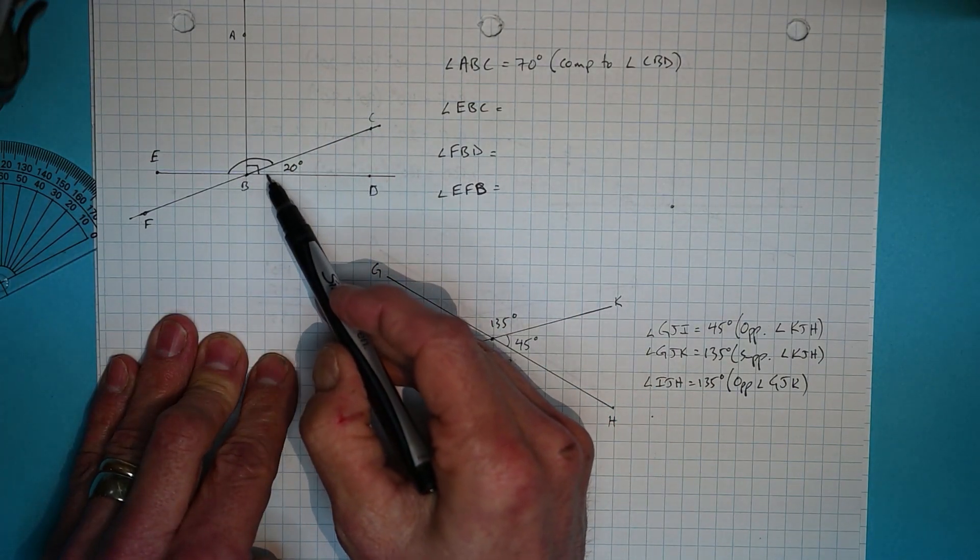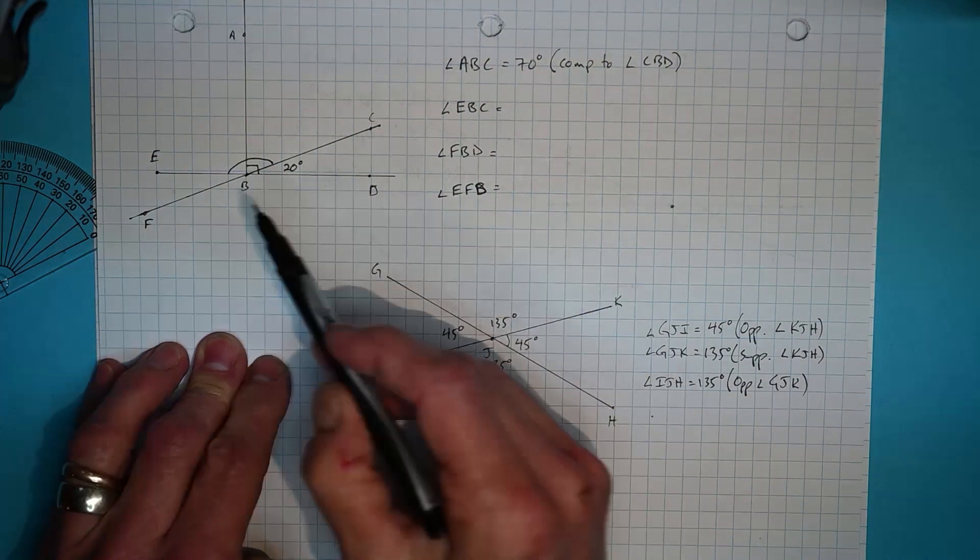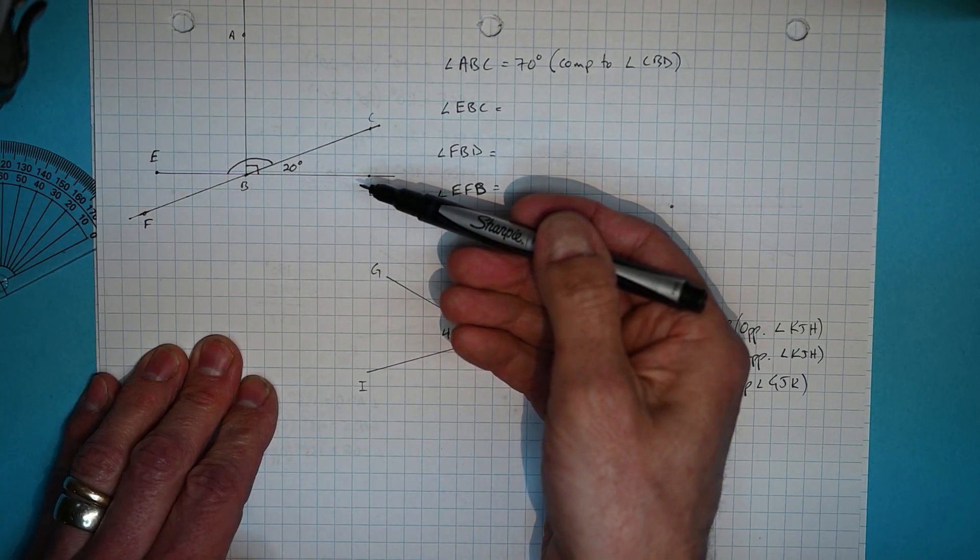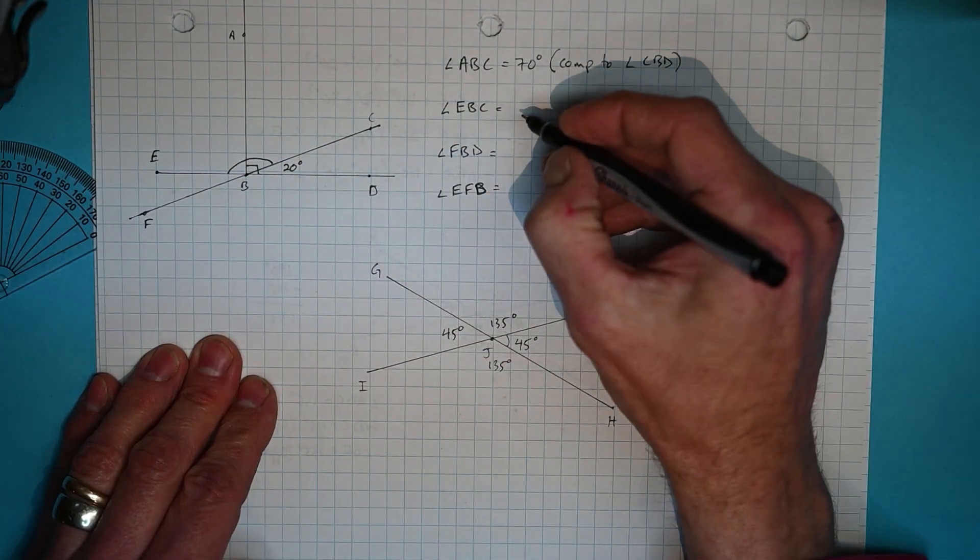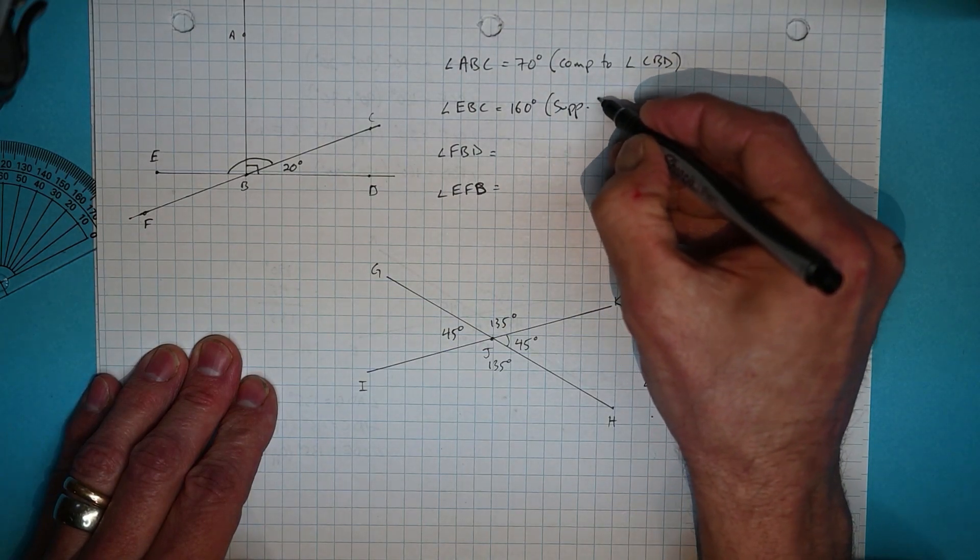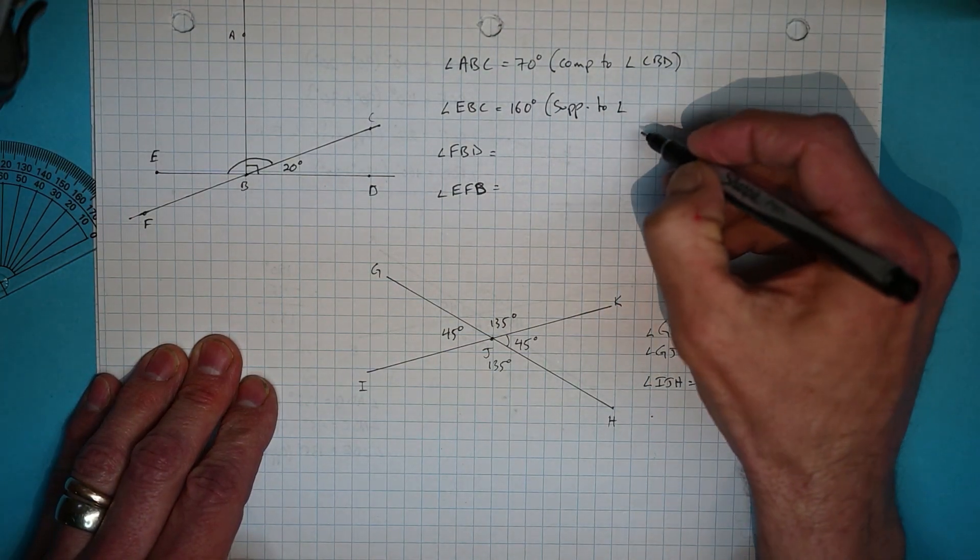And you should fairly quickly be able to see that there's a straight line EBD. And this angle here is supplementary to the one we're looking at. So we know that the straight line is 180. So 180 minus 20 is 160. And that is because that angle is supplementary to angle CBD.